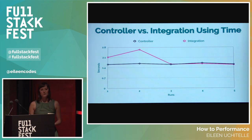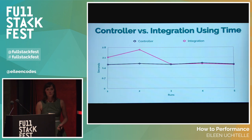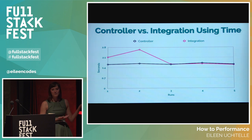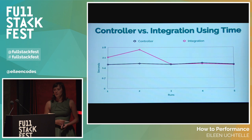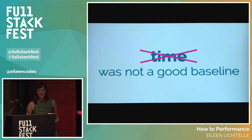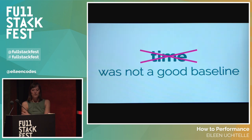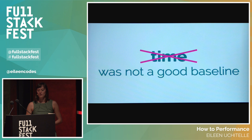The time a single test took to run varied a lot, and after a few runs it looks like there's no slowdown at all — they appear the same speed. But I knew that this wasn't true. So it points to the fact that time is not a good baseline for this type of performance work. It's good for getting an initial sense of whether something is slower, but it's not great for actually benchmarking.